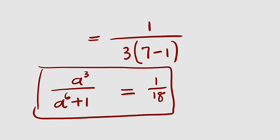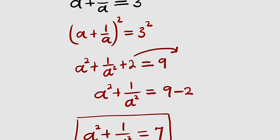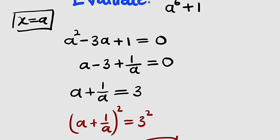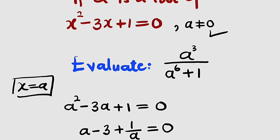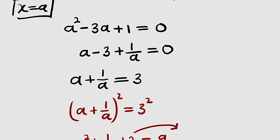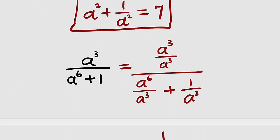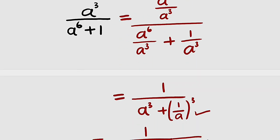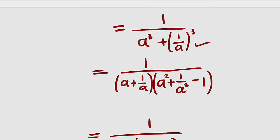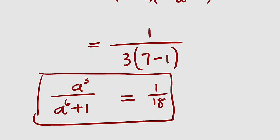Therefore, a to the power of 3 divided by a to the power of 6 plus 1 equals 1 divided by 18, provided that a is a root of the given quadratic equation. Thank you for watching. Do share with your learning colleagues and don't forget to subscribe.